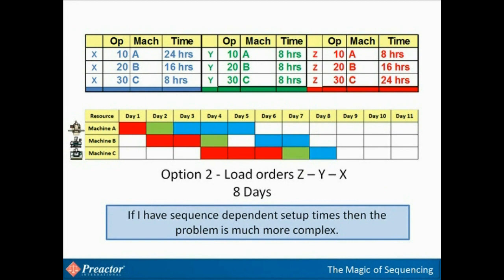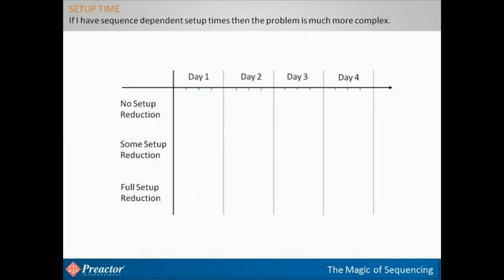On top of that, if, for example, we had sequence-dependent setup times, the mathematics becomes more complex. For example, it might take one hour to change from product X to Y, but three hours to change from Y to X. The influence of sequence-dependent setup times is shown here. We have three products again: blue, green, and red. The length of each colored bar represents the run time for the batch.